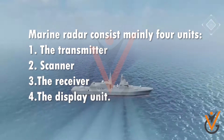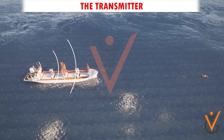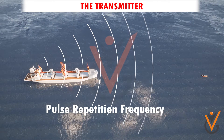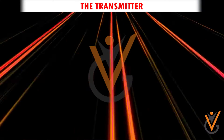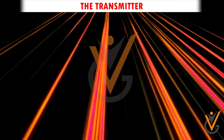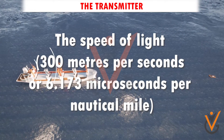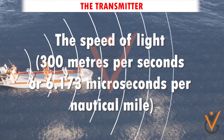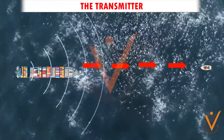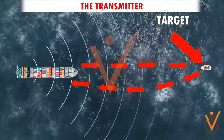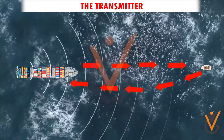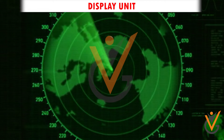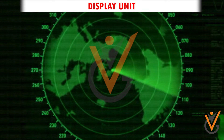The transmitter sends out short, powerful bursts of electromagnetic energy called pulses, characterized by the pulse repetition frequency (PRF). These pulses travel at the speed of light — approximately 6.173 microseconds per nautical mile — and when they strike any objects, referred to as targets, in their path, they are reflected back to the scanner as echoes. The receiver processes each echo and causes it to show visually as a bright spot called a blip on the screen of the display unit.